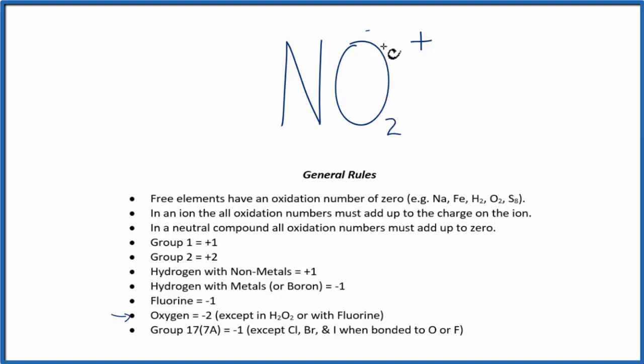So we have two oxygens. Each one will have a negative 2 as its oxidation number. So both of them together, that's a minus 4.